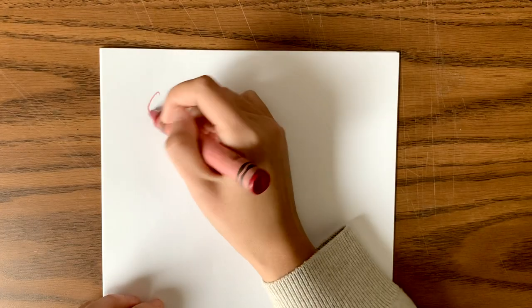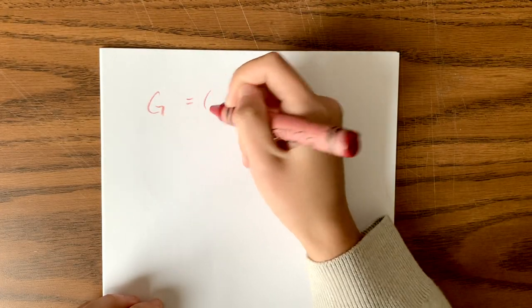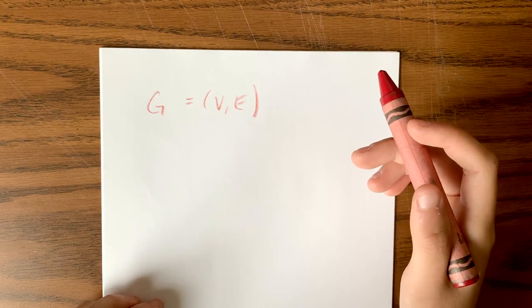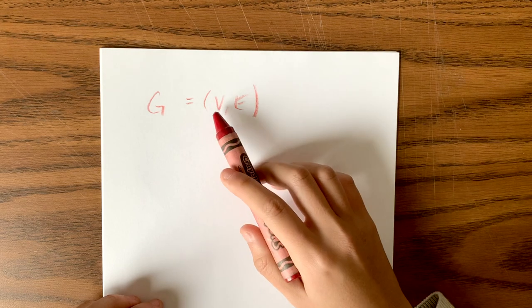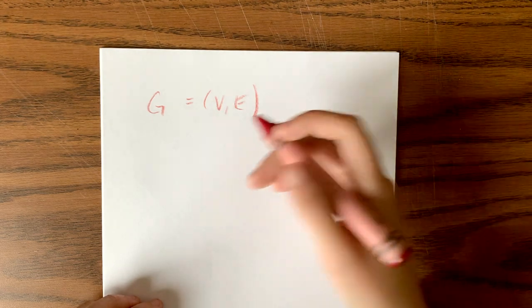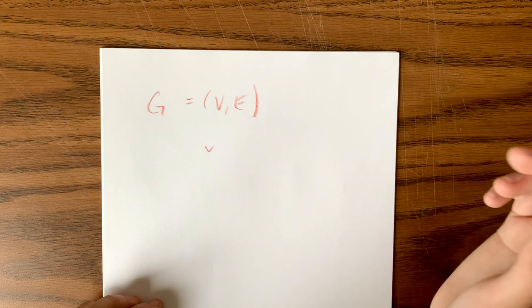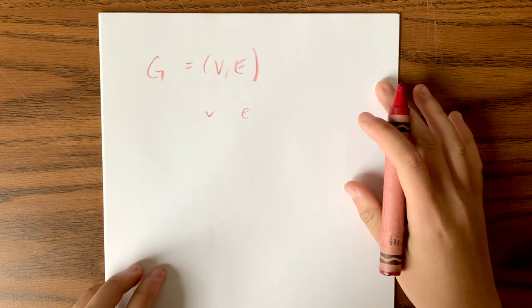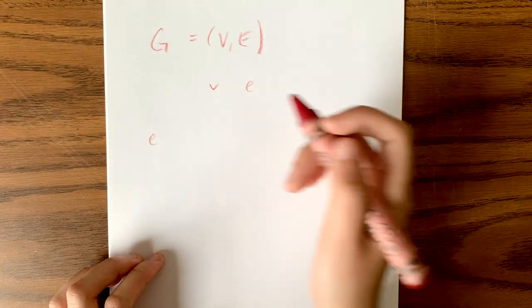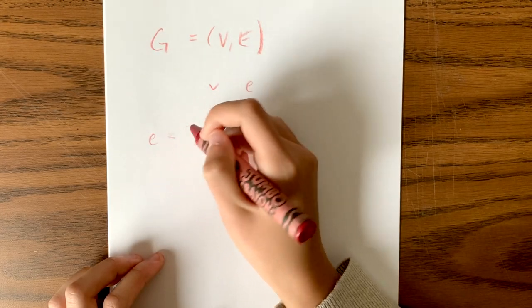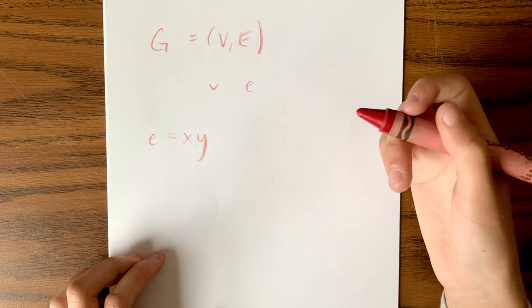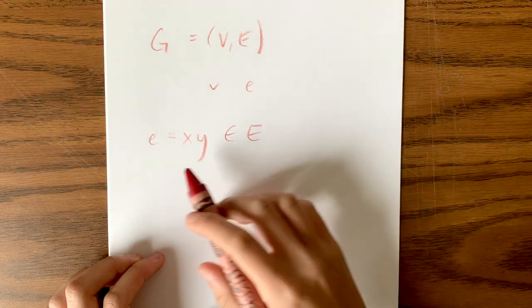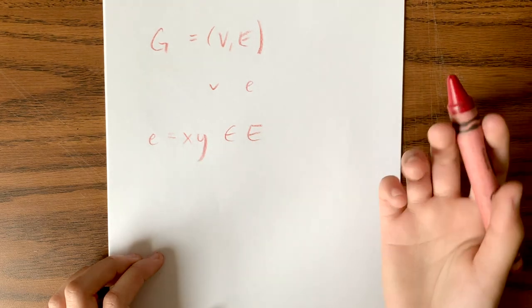A graph G has a pair where V is a vertex set and E is the edge set. A single vertex within this vertex set can be written as a lowercase v, and a single edge in the edge set can be written as a lowercase e. If we have an edge E, we can say that this is equal to (x, y), where x and y are adjacent vertices, E is incident to x and y, and x and y are neighbors.